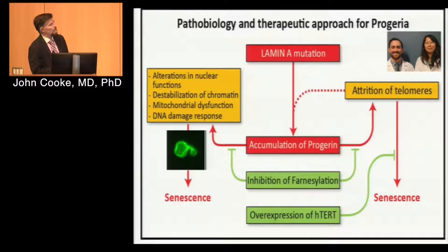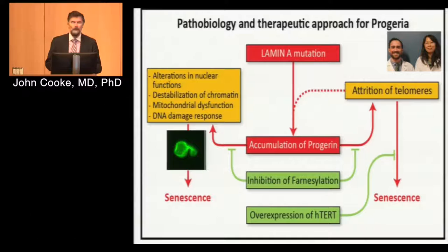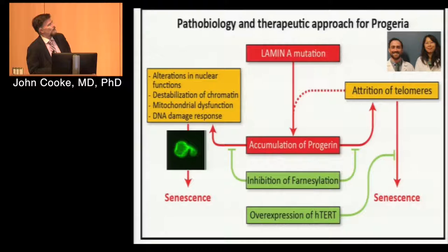Telomere erosion is a condition these kids have, and we thought that although it's secondary to the primary mutation, it might be a major cause of the aging phenotype. So we investigated the hypothesis — this is Timo Nazari-Sharif and Yanhui Li who investigated whether RNA telomerase overexpression of H-TERT could improve the cell phenotype.